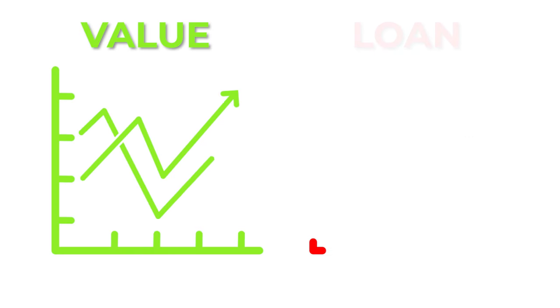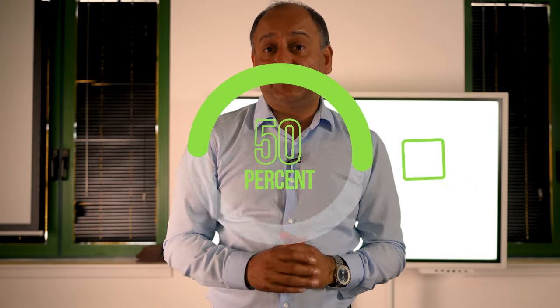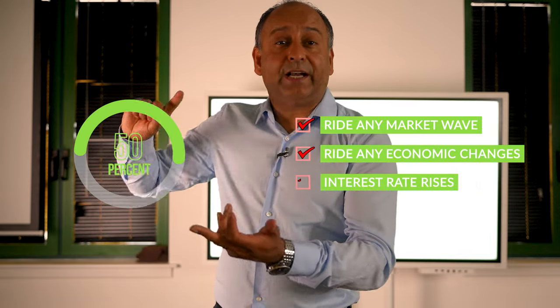So your loans become less in real terms. Once you get to 50%, you are now at the most de-risked position you could possibly be. At 50%, you can ride any market wave — you can ride anything that's going on in the economy, you can ride interest rate rises. When I started back in 1989, the interest was 17.5%. Whatever the situation is, you can ride that wave and be safe and secure at 50%. Now, if you do that too early, you're going to leave money on the table. It really depends on where you are in your property journey.